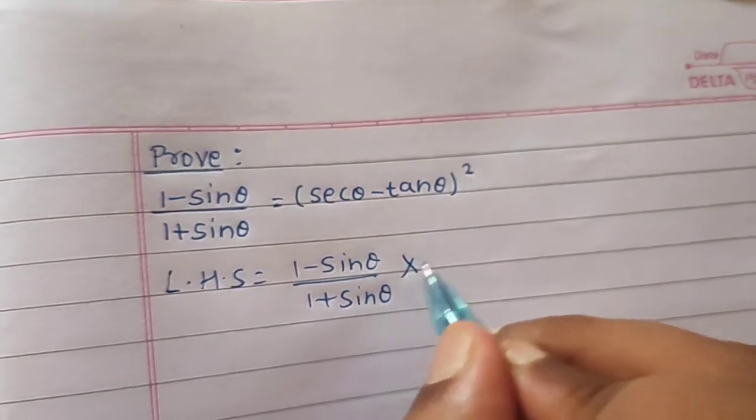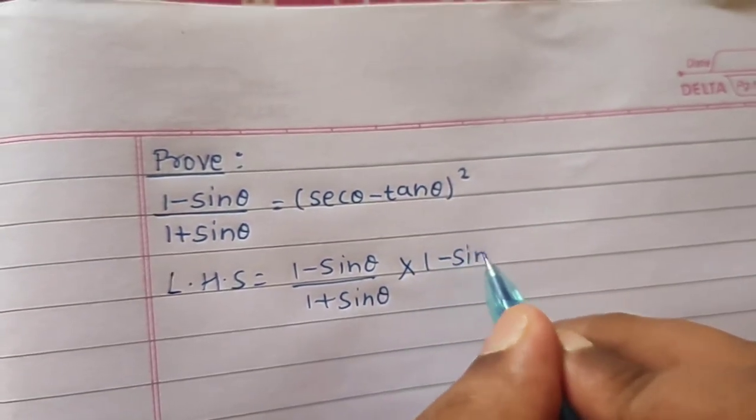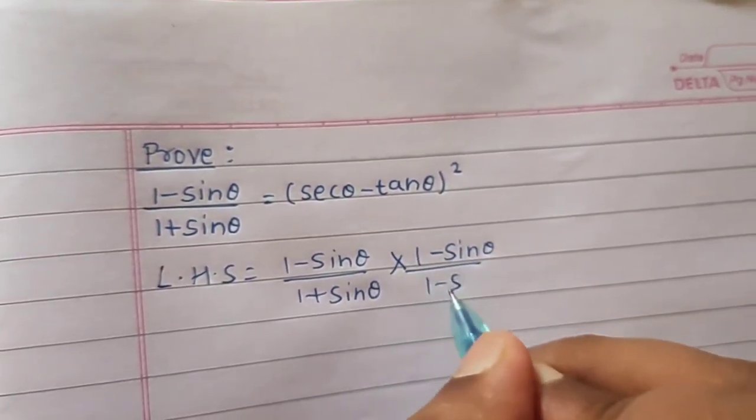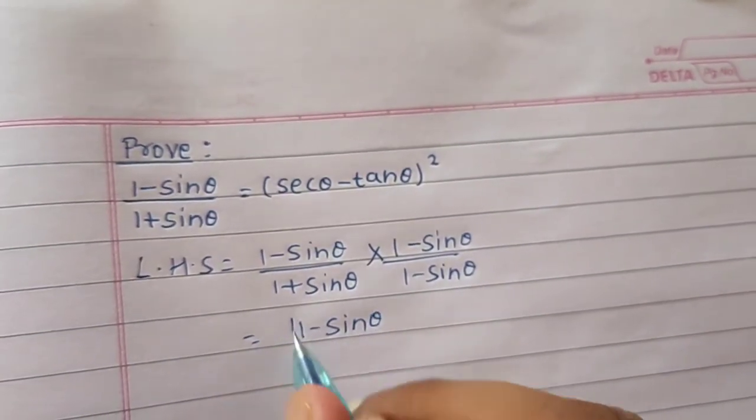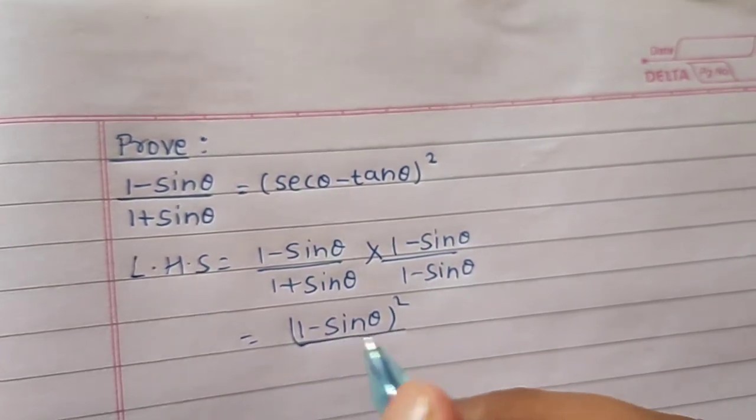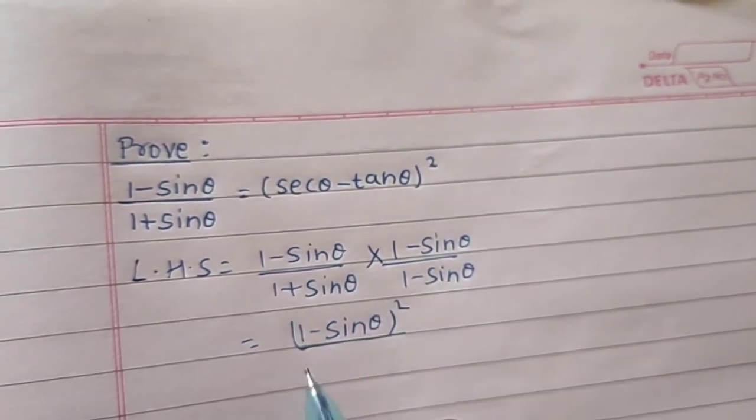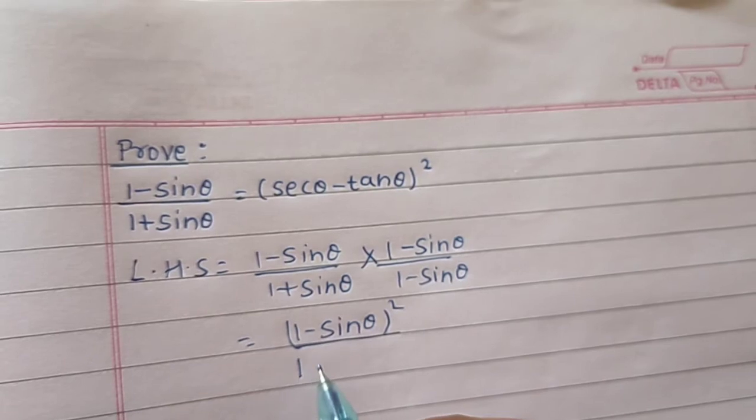Let's rationalize it. 1 minus sin theta divided by 1 minus sin theta. Our numerator becomes 1 minus sin theta the whole square. Our denominator becomes a plus b a minus b which is a square minus b square.